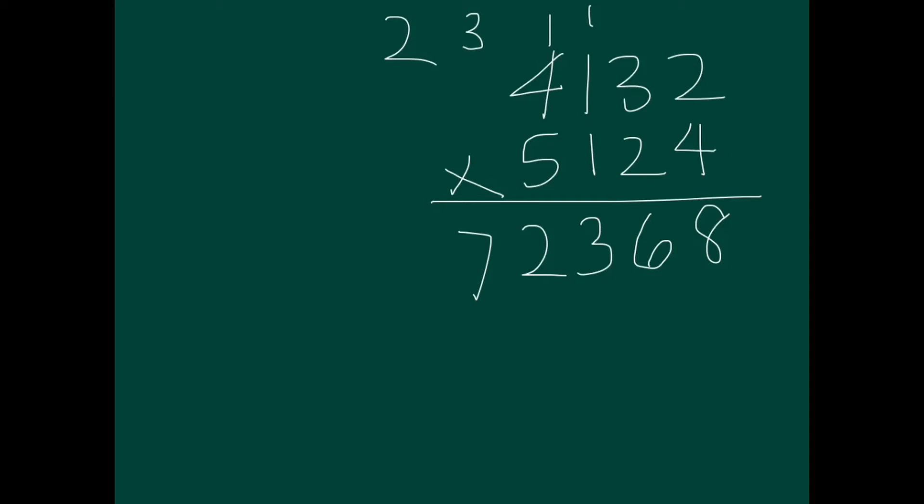And then, it's getting easier now, five times one is five, plus four times one, that's nine, ten, eleven. Carry over one.